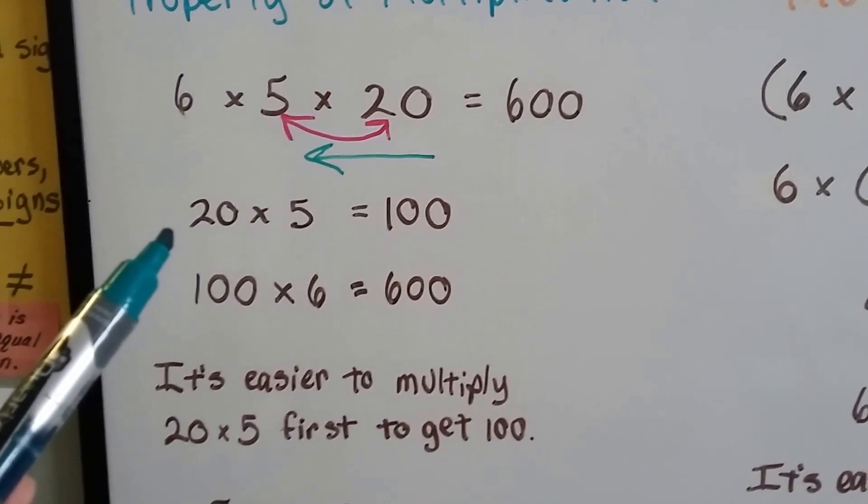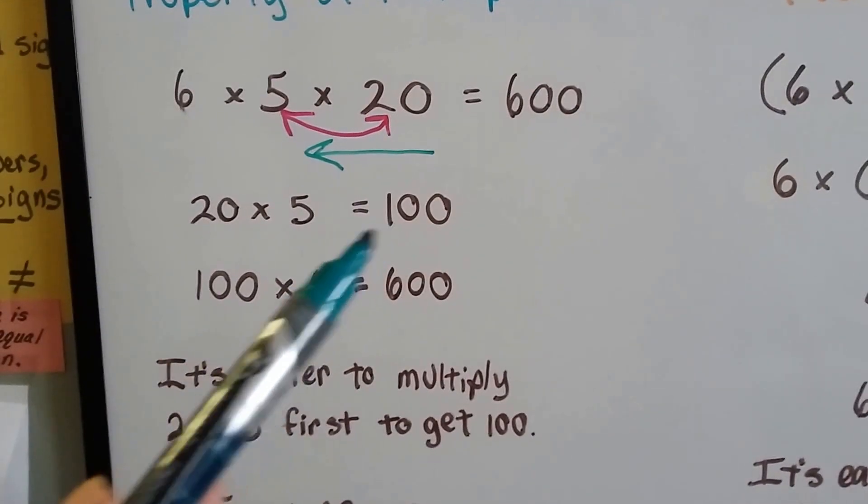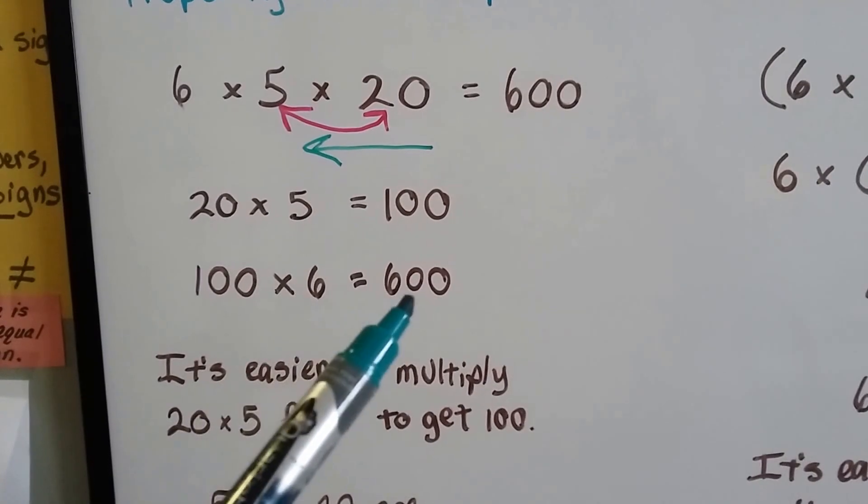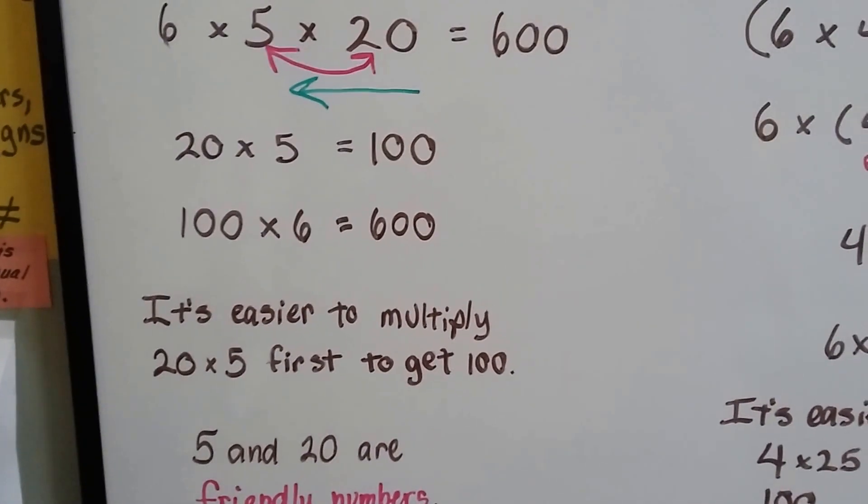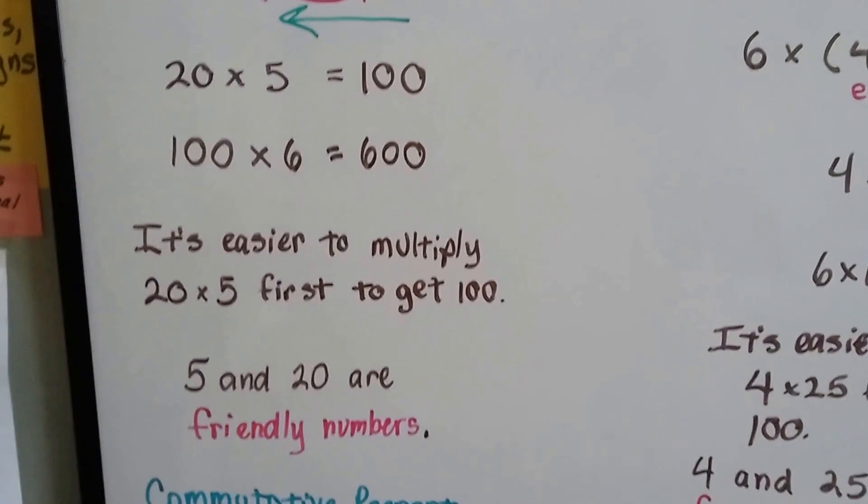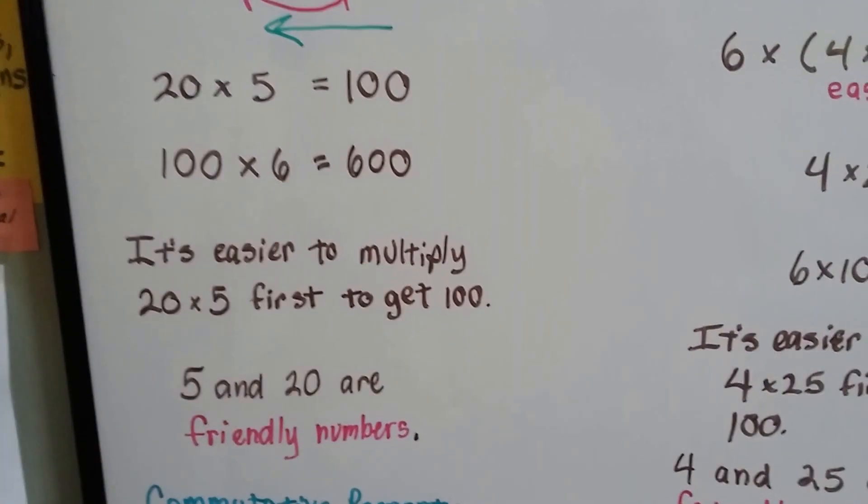We do 20 times 5 first to get 100, then multiply by 6 to get 600. It's easier to multiply 20 times 5 first because 5 and 20 are friendly numbers.